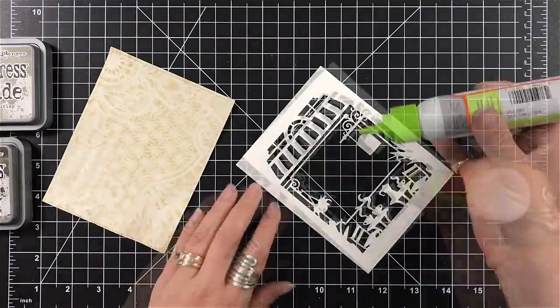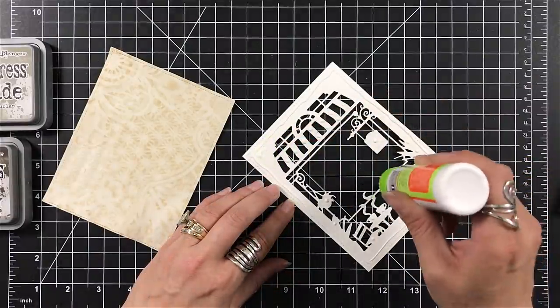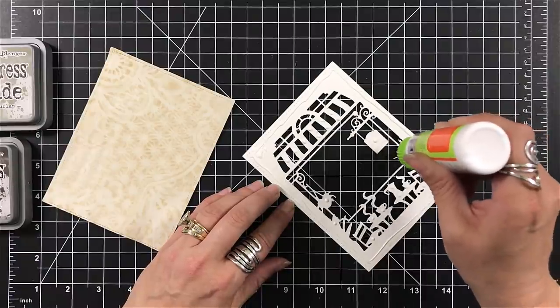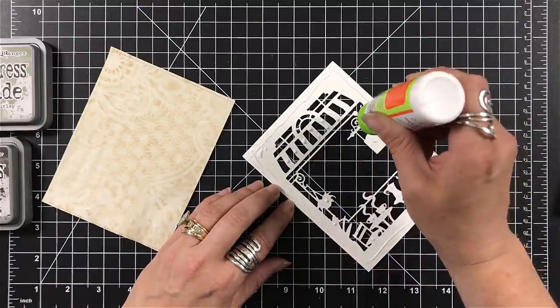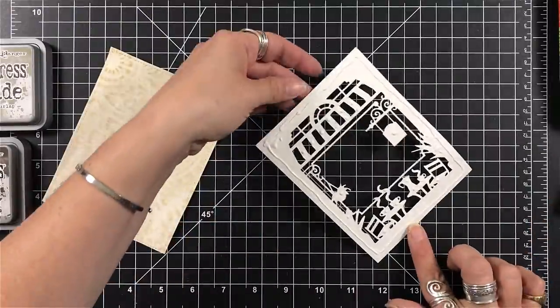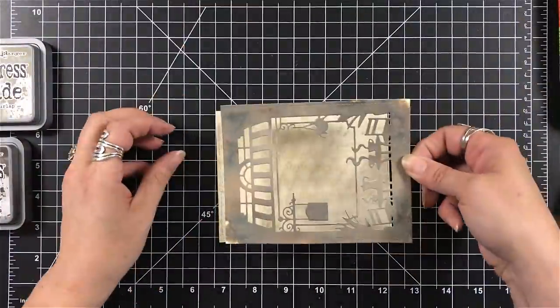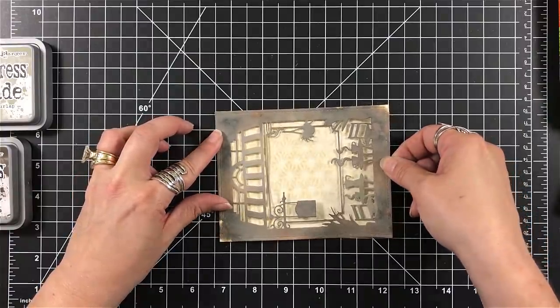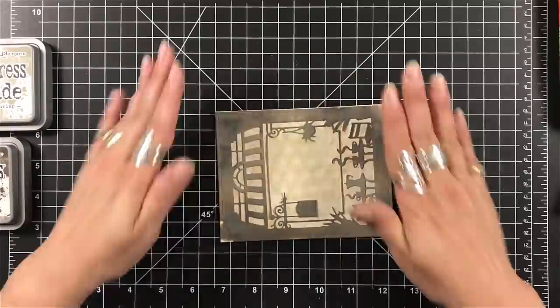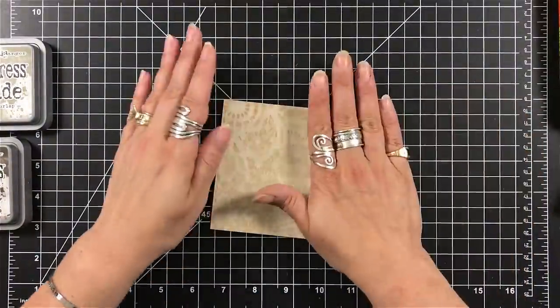From that panel, I used a stitched square and I used one of the fancy dies. I'm now just going to use my tacky glue from Tonic and I'm going to adhere this right onto the coffee tea dyed paper. I wanted to give that some stability and I really liked using that paper as the backdrop.